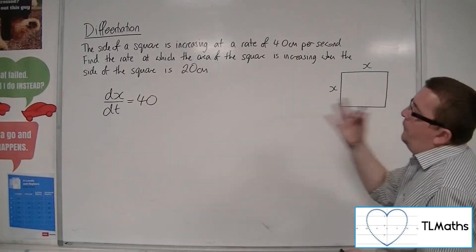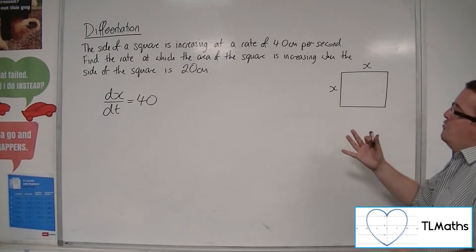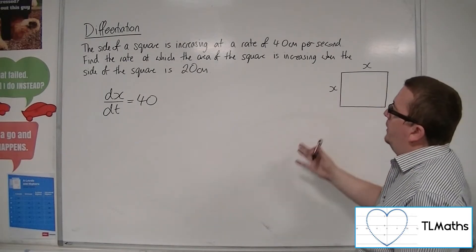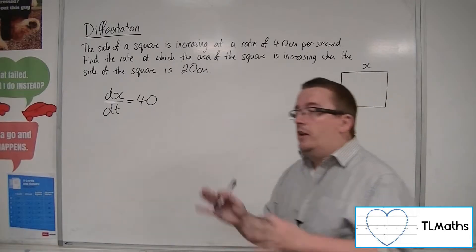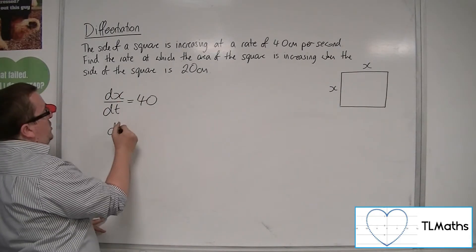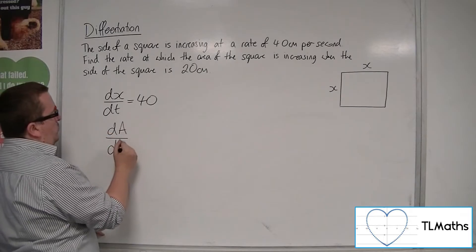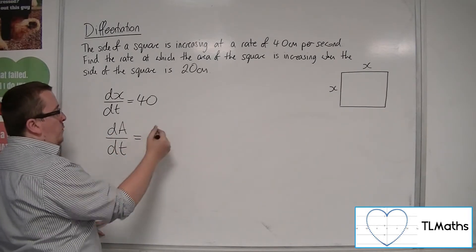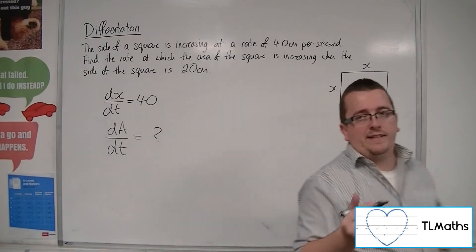Now it's asking, find the rate at which the area of the square is increasing when the side of the square is 20 centimeters. So I want the area, so the rate at which the area is changing with respect to time. That's what I want. Okay, the dA/dt.